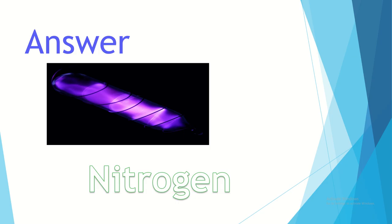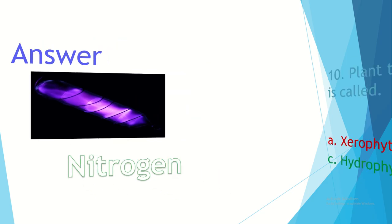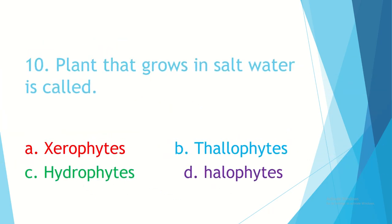This is the last question. 10th question. A plant that grows in salt water is called — Option A, serophyte. Option B, thelophyte. Option C, hydrophyte. Option D, halophyte. Your time starts now.